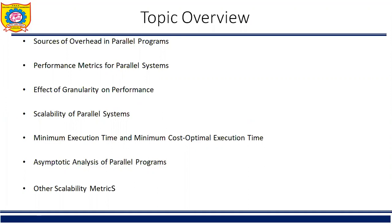In the previous video we completed sources of overhead in parallel programs and performance metrics for parallel systems. We discussed the two main performance metrics: speedup and efficiency, along with the parallel time Tp. We considered two examples — adding n numbers on n processors, and sorting numbers using bubble sort and quick sort.